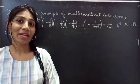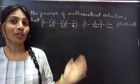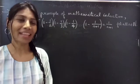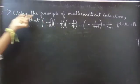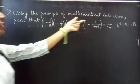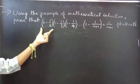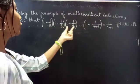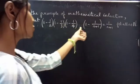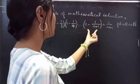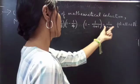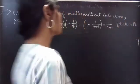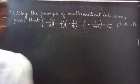Hello everyone, this is Jay Kaltner here. In this video, we are going to see a problem from mathematical induction. The problem is: using the principle of mathematical induction, prove that (1 - 1/2) × (1 - 1/3) × (1 - 1/4) × ... × (1 - 1/(n+1)) = 1/(n+1), for all n belonging to natural numbers.